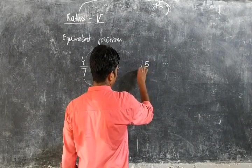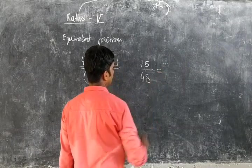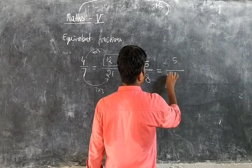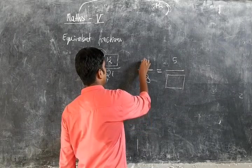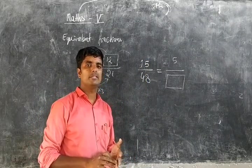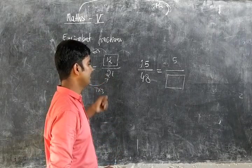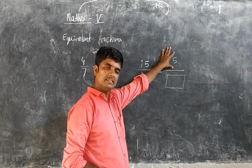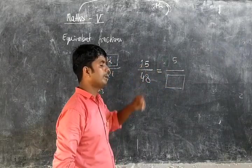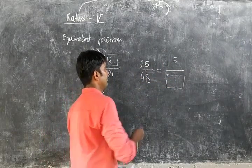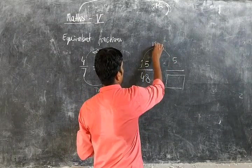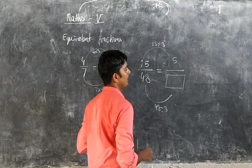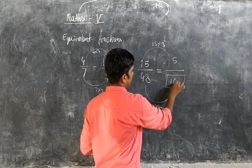One more example. Suppose we have 15 by 45 — this is the multiply form. Now we can find the divide form. Here, as the denominator, we have to find what divides both the numerator and denominator. The number that divides both is 5. So 15 divided by 5 equals 3, and 45 divided by 3 equals 15. Then we divide 48 by 3, so 3 is equal on both sides.